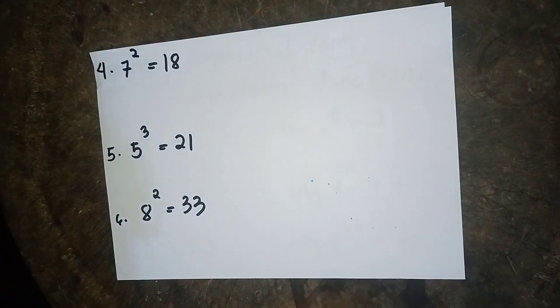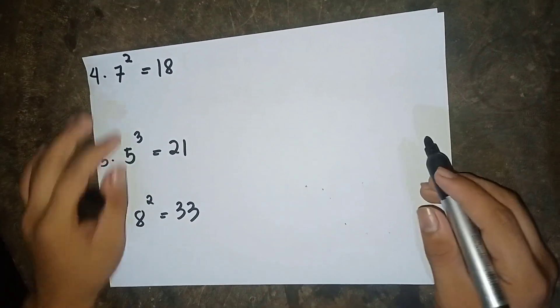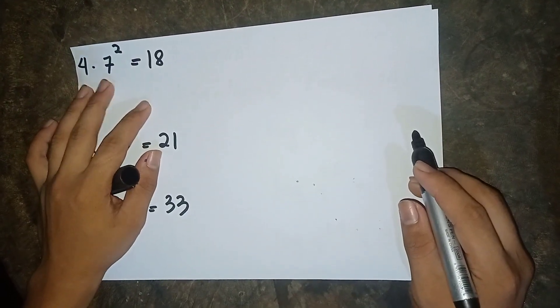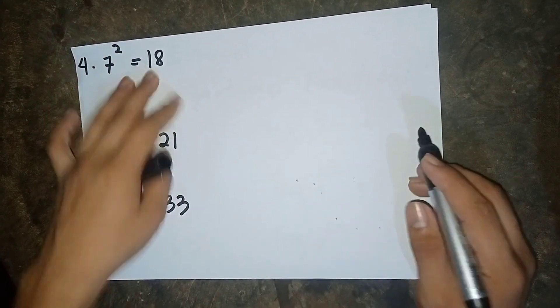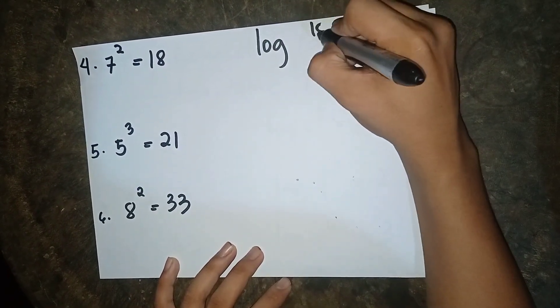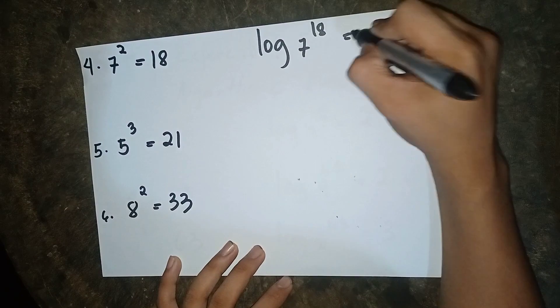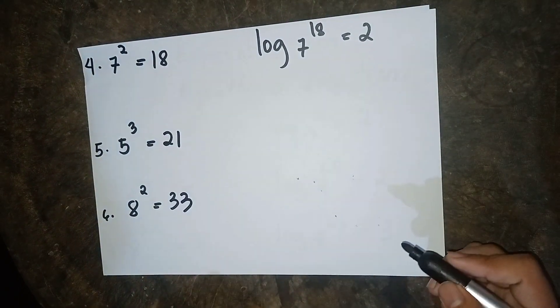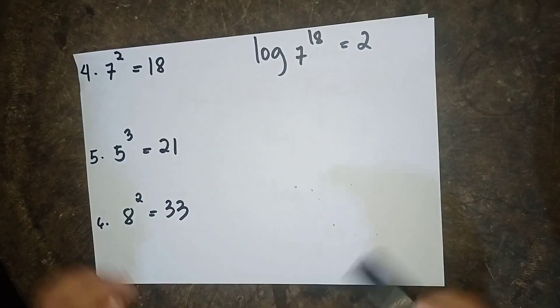So example number 4. Here is example number 4. So our example number 4 is 7 to the power of 2 is equal to 18 which is our answer is log 18 base 7 is equal to 2.